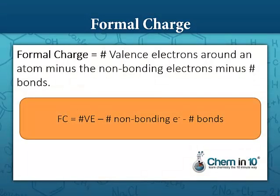Recall that formal charge is equal to the number of valence electrons minus the number of non-bonding electrons minus one-half the number of bonding electrons, or as I like to shorten that to minus the number of bonds.